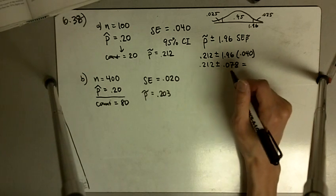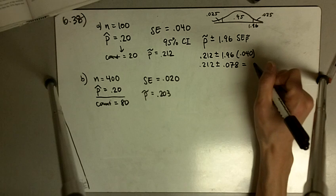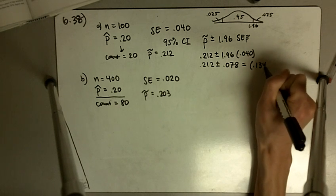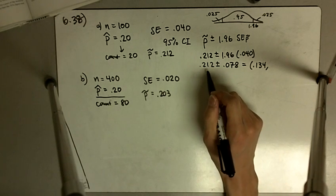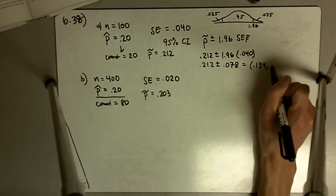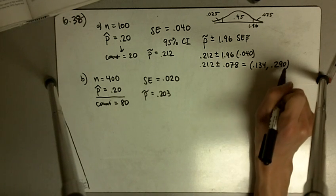And that gives you, if you do 0.212 minus 0.078, you get 0.134. And if you do 0.212 plus 0.078, you get 0.290.